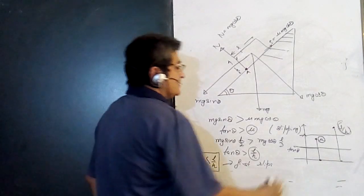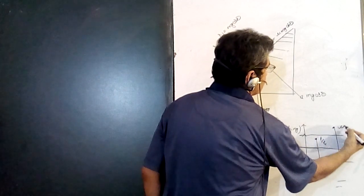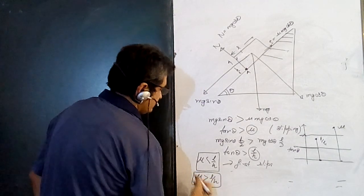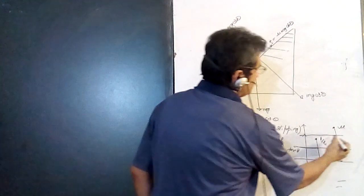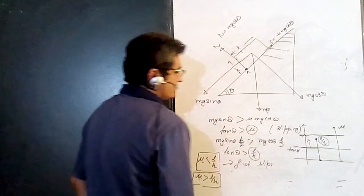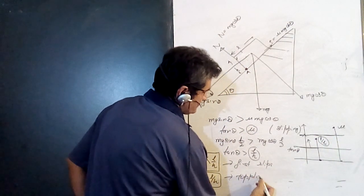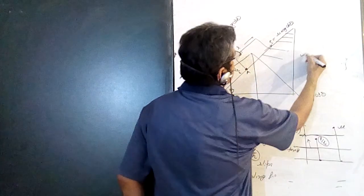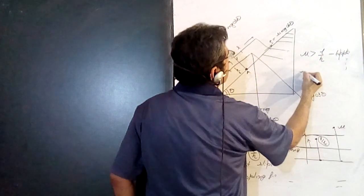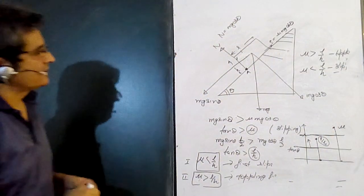Now take the reverse situation where mu is greater than L/h. As tan(theta) increases and crosses L/h first, the block topples before it slips. So: if mu > L/h, the block topples first; if mu < L/h, the block slips first. This is the basic summary of toppling and slipping conditions.